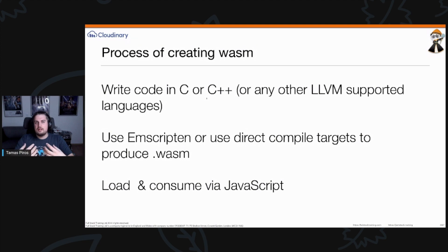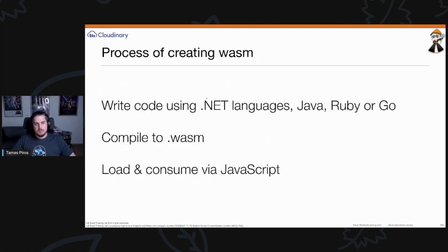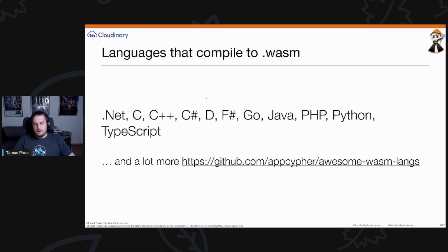The other approach is to take an existing C or C++ project, run it through Emscripten with the WASM compilation target, and then do the loading and consumption. There are also non-LLVM languages — like .NET, Java, Ruby, and Go — that can all compile to WebAssembly as well. You write or take existing code in these languages, compile to WebAssembly, and the process is the same: load and consume it via JavaScript.